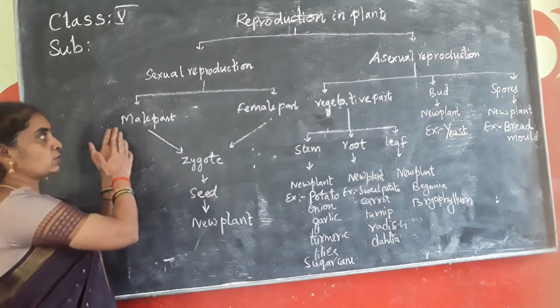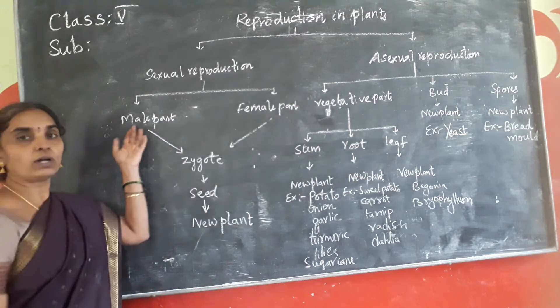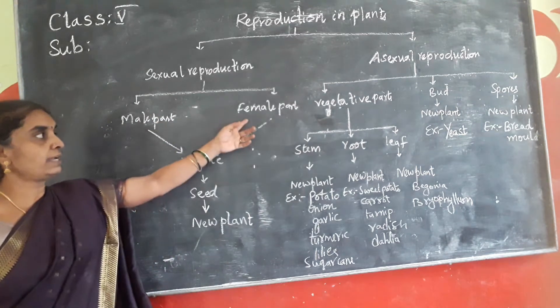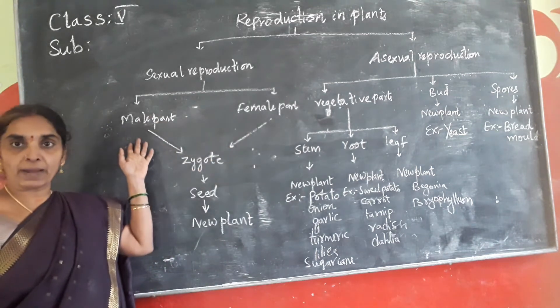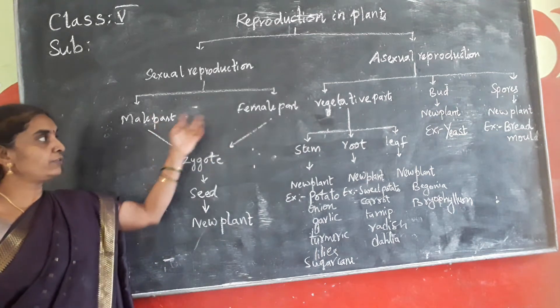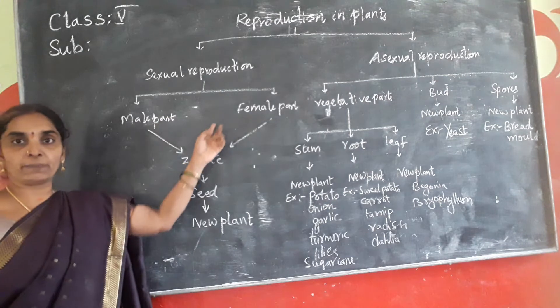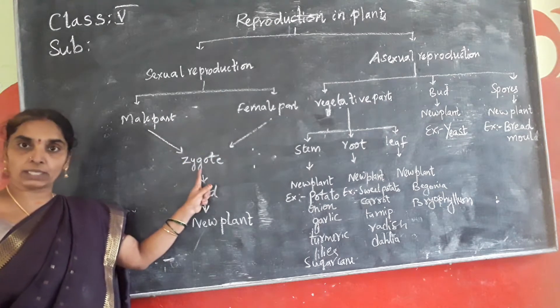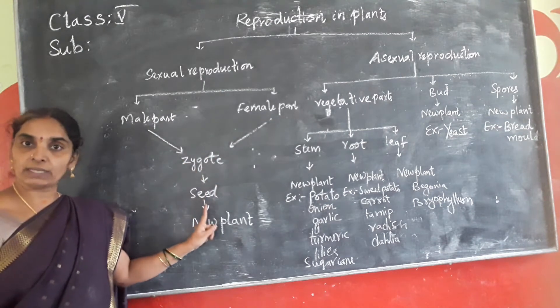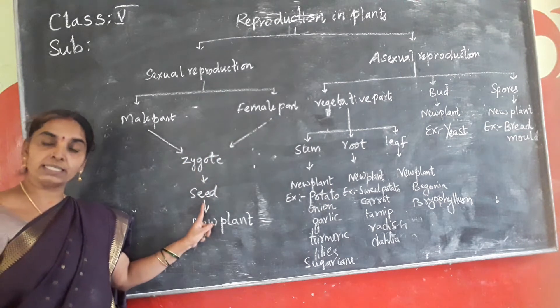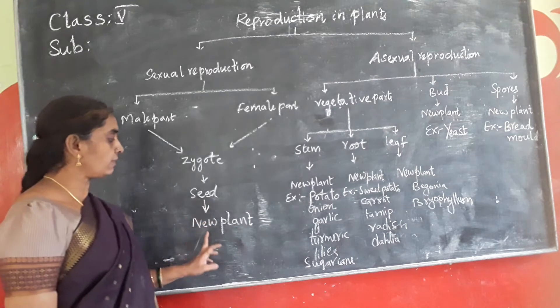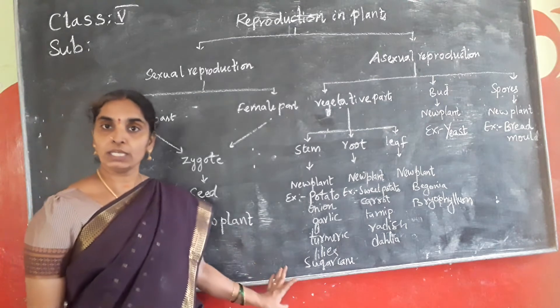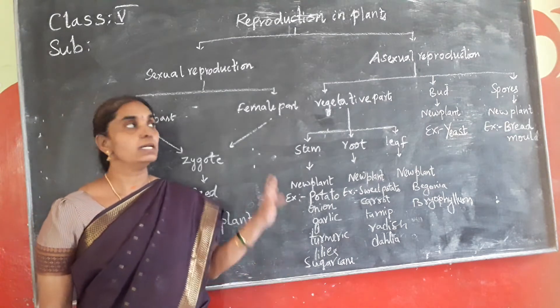So sexual reproduction involves male and female parts. The fusion of male and female parts results in the formation of a zygote, which develops into the seed, and the seed develops into the new plant.